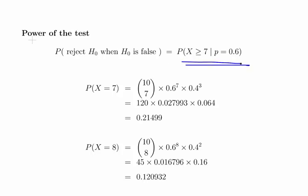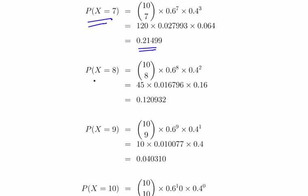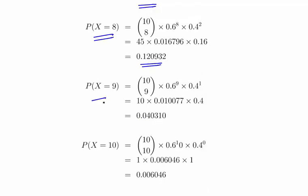Calculate that. Now this is a very similar sort of calculation to the one I've just done. So I'll just breeze by very quickly. Now we should find the probability of X equal to 7 to be 0.21499. Probability of X equal to 8 equals 0.120932. X equal to 9, 0.040310. And probability of X equal to 10, 0.006046.